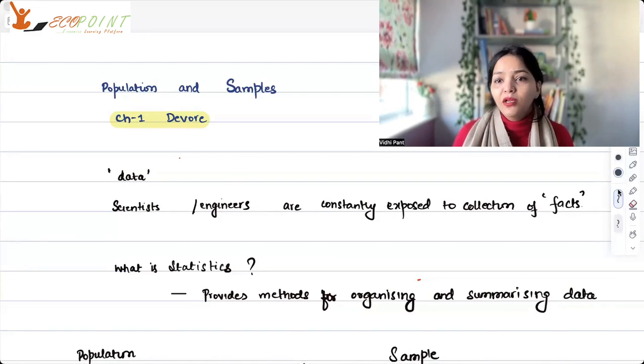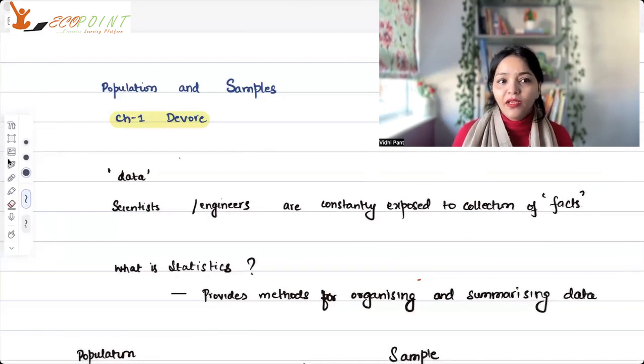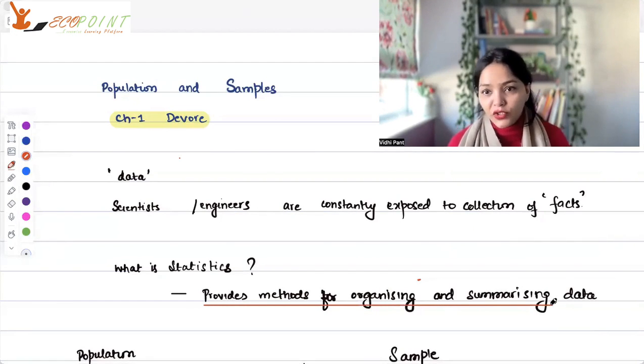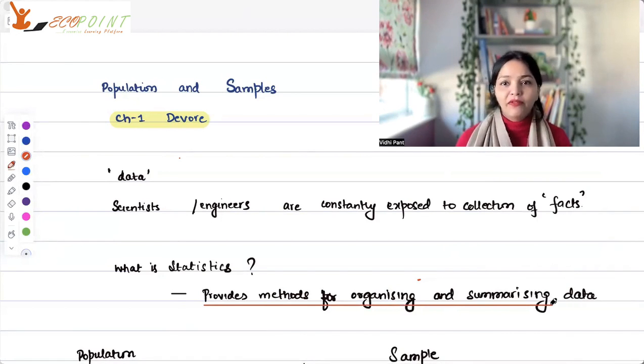Statistics is simply something that provides methods for organizing these facts. Now you have a lot of facts with you, but you've got to organize them in order for you to be able to understand and get more meaning out of your collection of facts. In this process, there comes two very important words: population and sample.